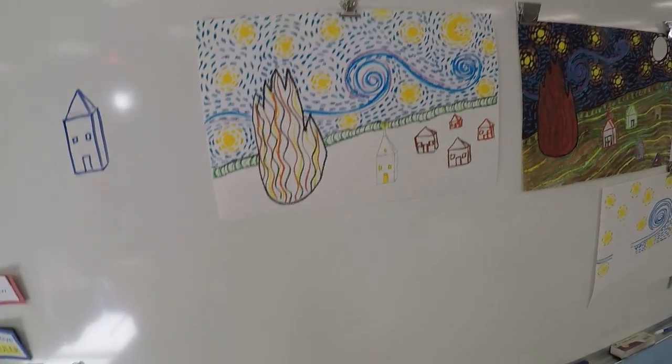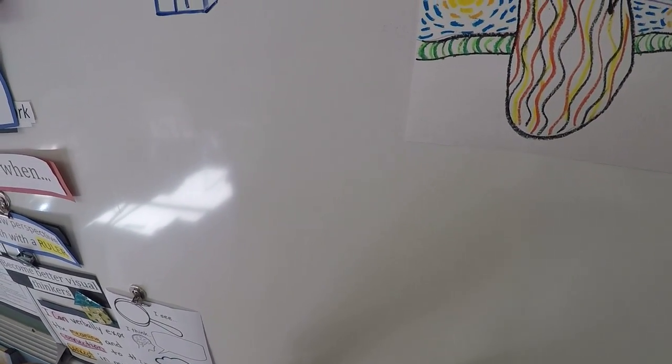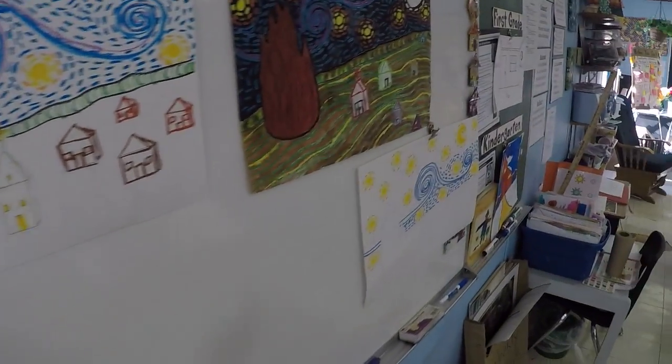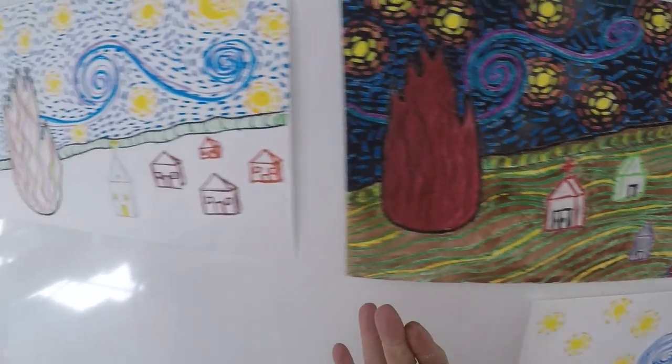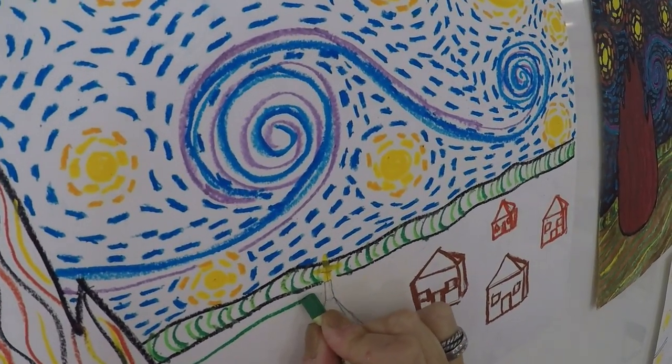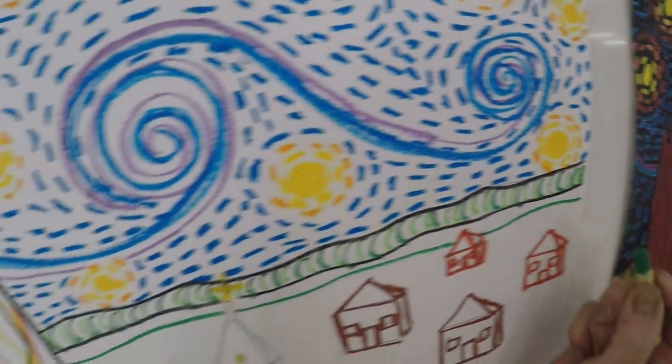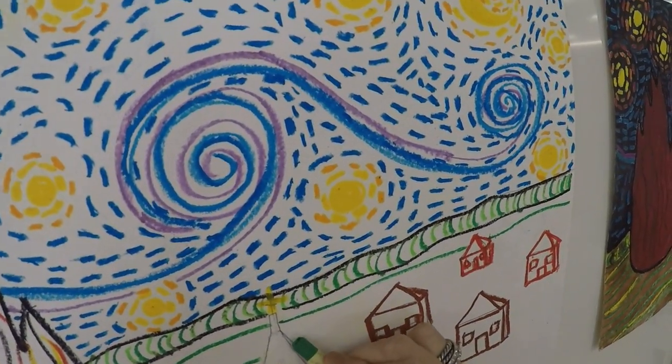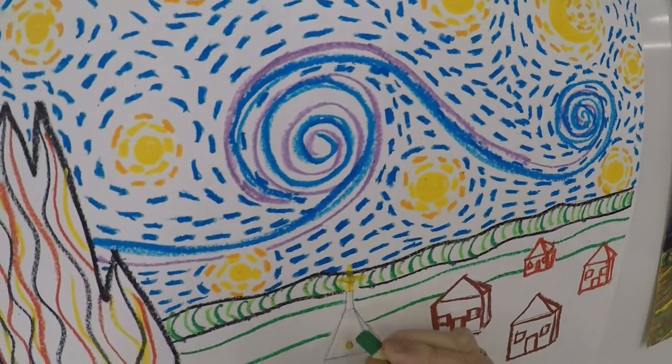Next I want you to go ahead and pick back up the dark green and the light green and what we're going to do is the lines across the mountain. You're just going to do lines going across. Make sure you jump over any houses or anything in the way. Leave some space in between the two dark greens because you are going to put in the lighter green in between them.